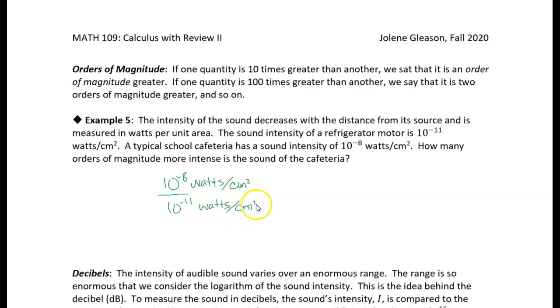This is a ratio, and the units cancel out. We can subtract the exponents: 10 to the minus 8 minus negative 11, which becomes plus 11. So that's 10 to the third, which is 1,000.